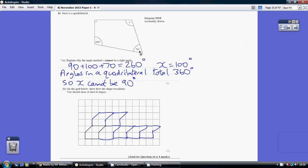remember that's 90 degrees plus 100 plus 70, that's 260. Now the angles in a four-sided shape, in a quadrilateral, add up to 360, so our missing angle must be 100 degrees. So therefore X cannot be a right angle because a right angle is 90 degrees.